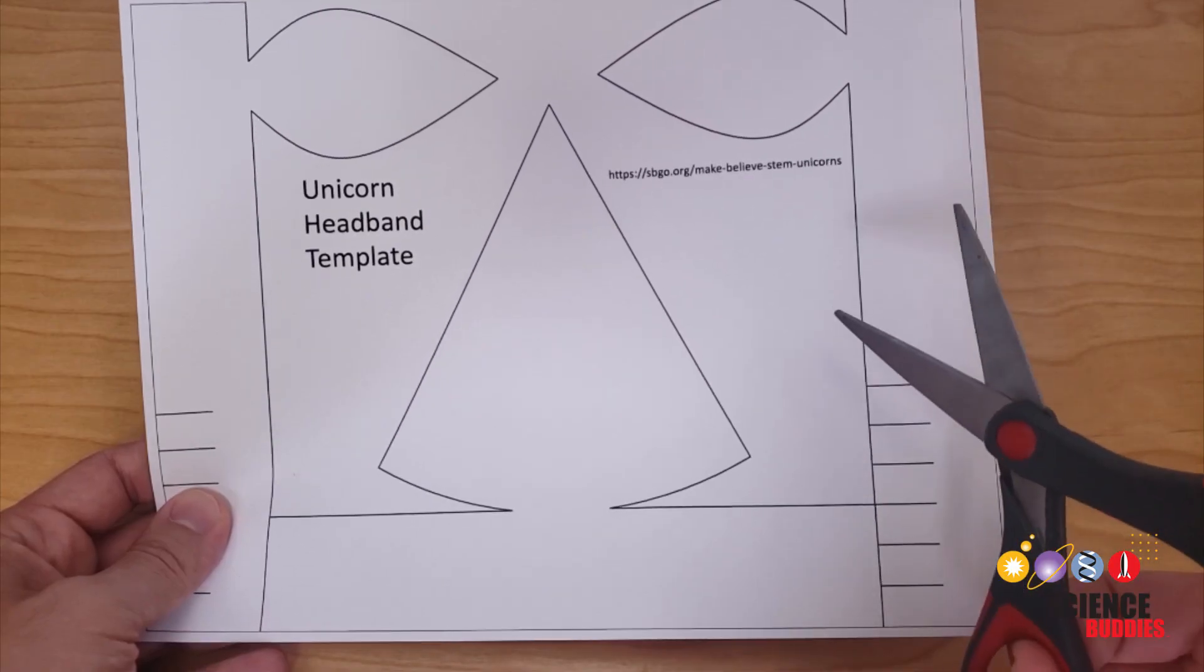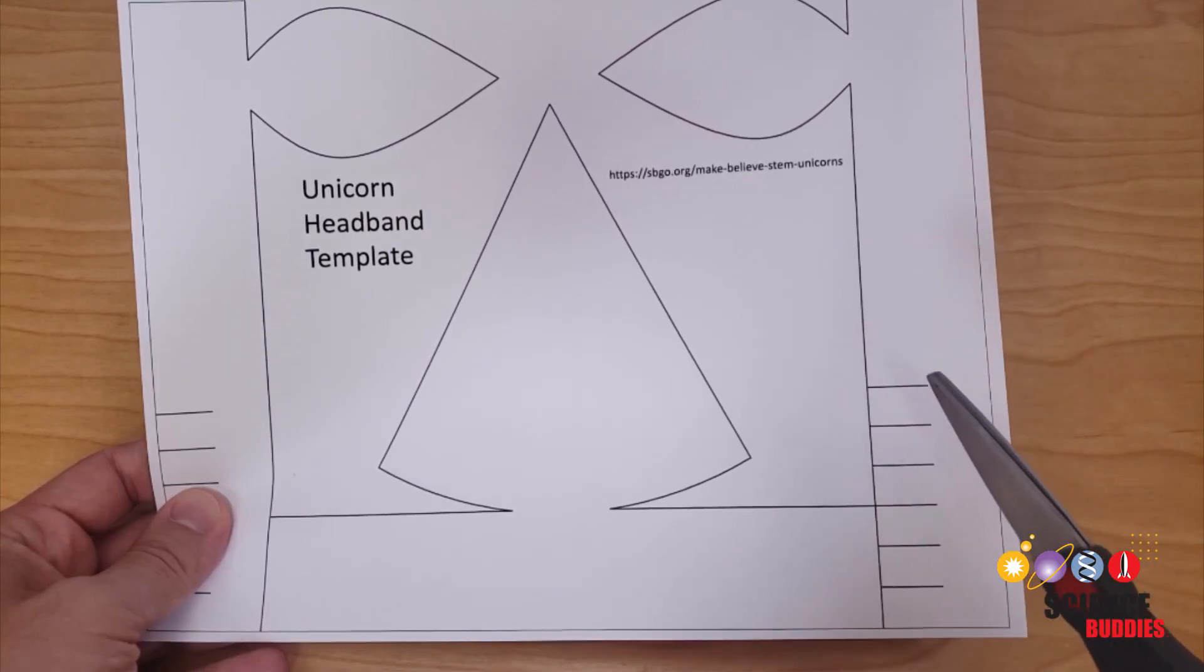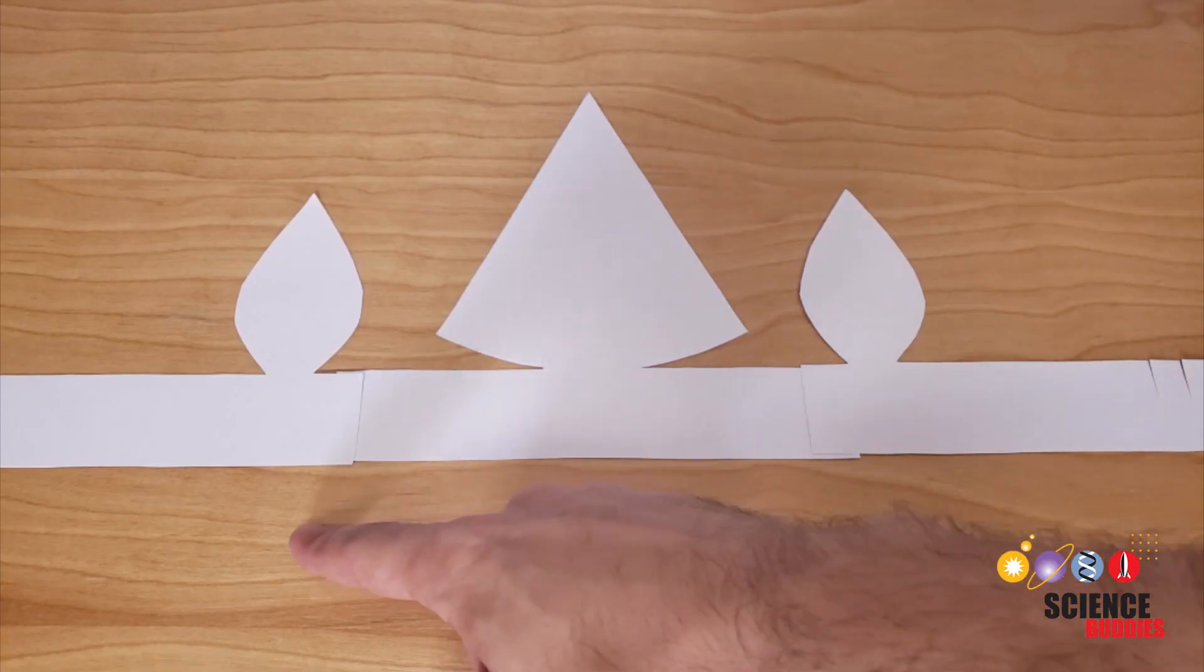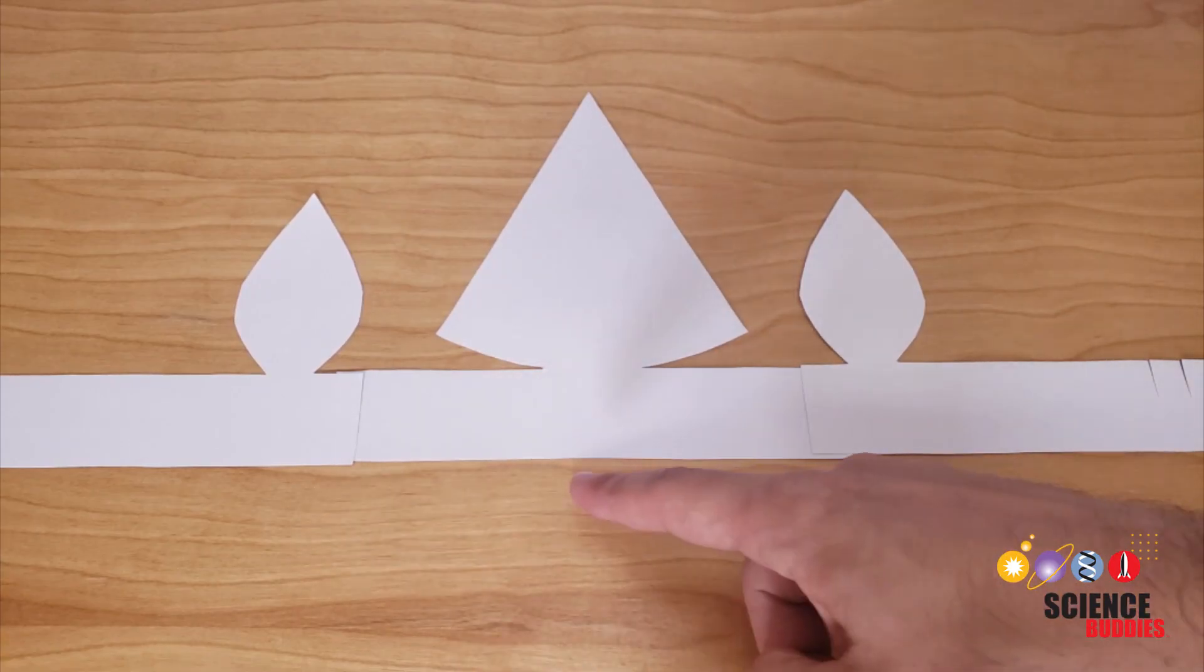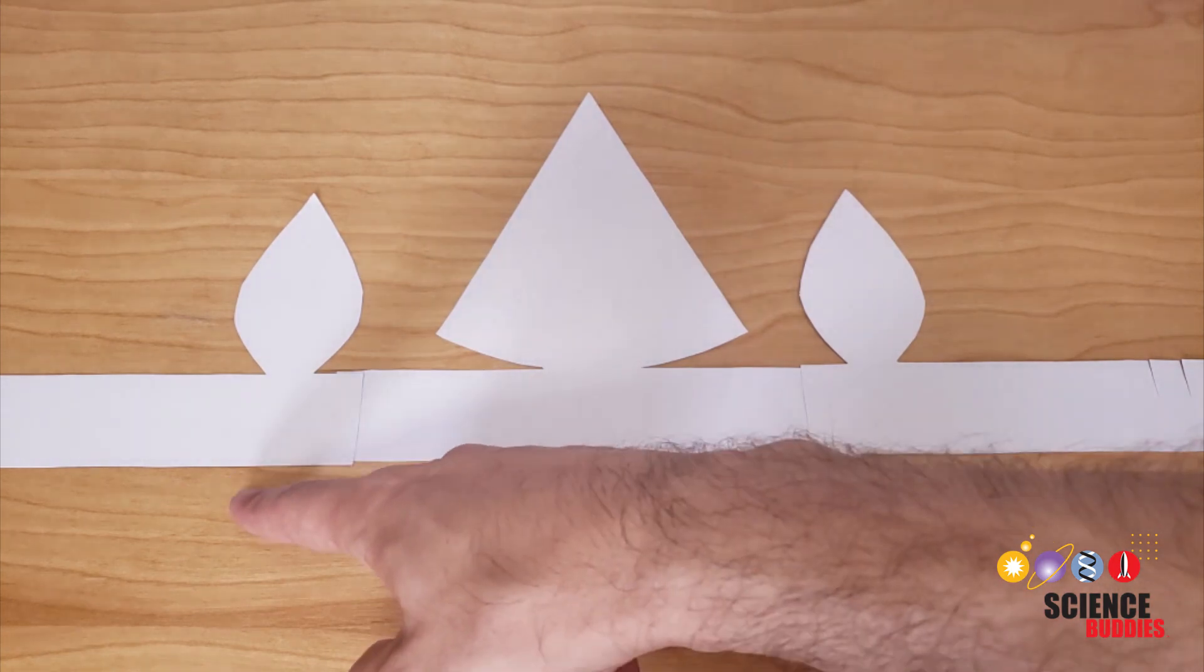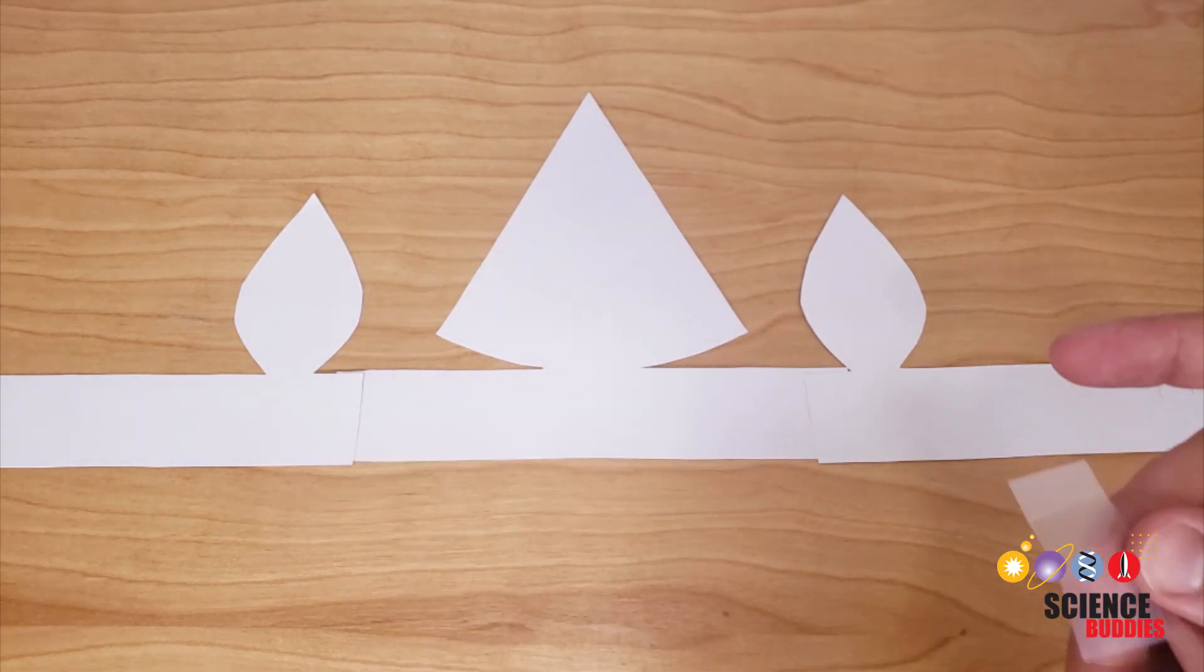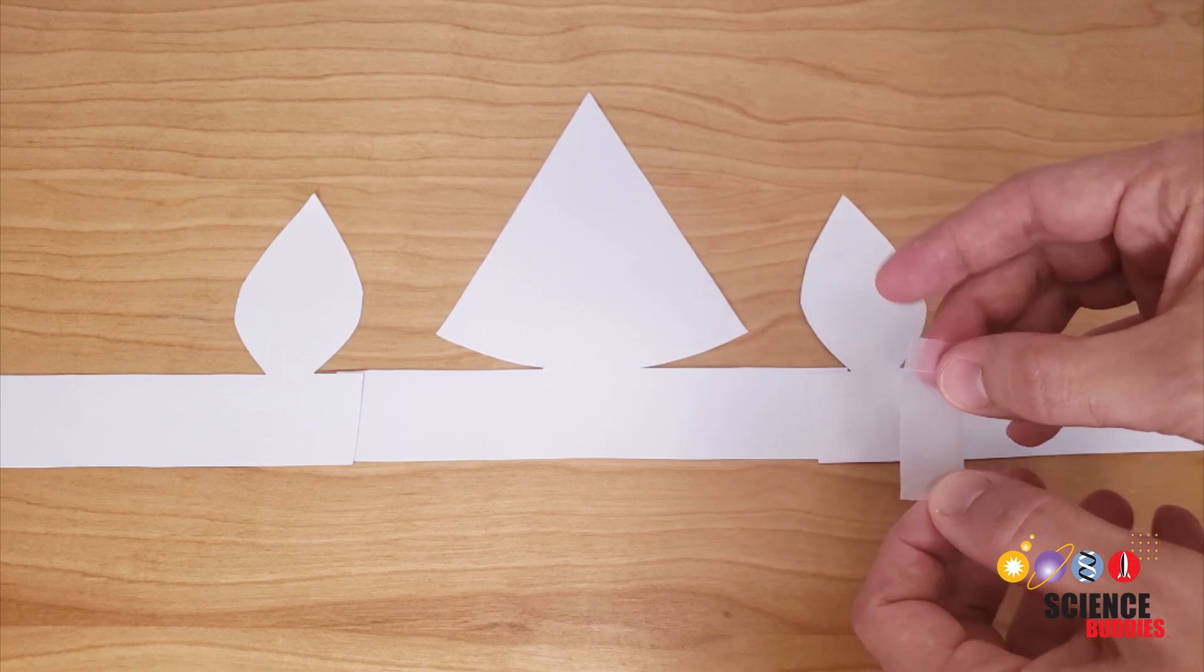Start by cutting out the pieces of your headband along the lines. Once you've cut them out align the three pieces like this. We have the middle piece with the cone and the two side pieces with the ears. Attach them together with pieces of clear tape.